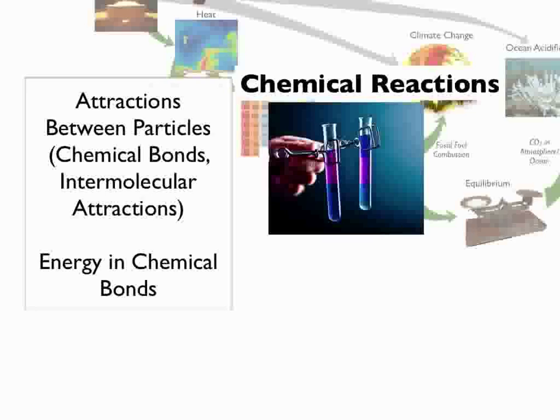They use their model of the internal structure of the atom to explain how chemical bonds and intermolecular attractions are all driven by electrical attraction. This model allows students to explain chemical potential energy measured at the macroscopic scale in terms of changes of electrostatic potentials as atoms change bonding partners.